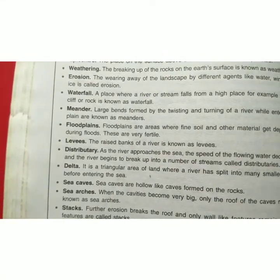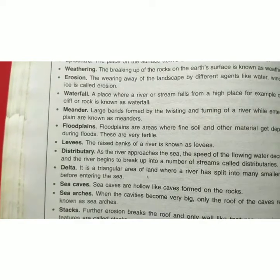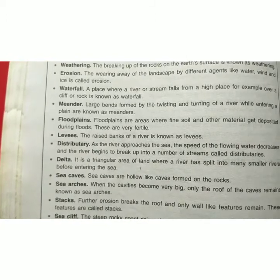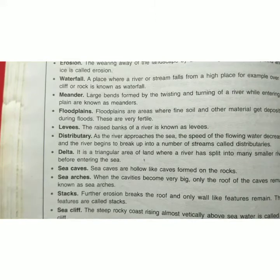Levees — the raised bank of a river is known as a levee. Distributary — as the river approaches the sea, the speed of the flowing water decreases and the river begins to break up into a number of streams called distributaries. Delta — it is a triangular area of land where a river has split into many smaller rivers before entering the sea.